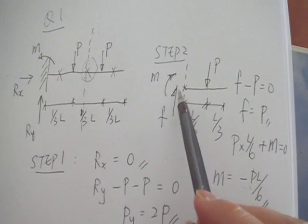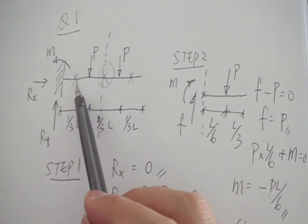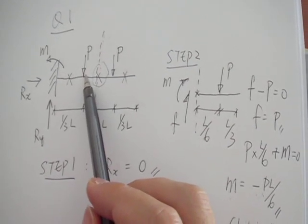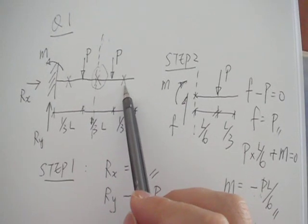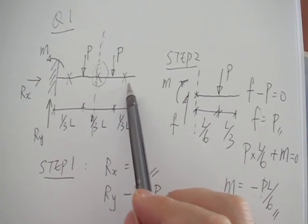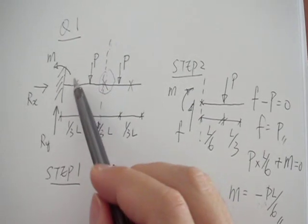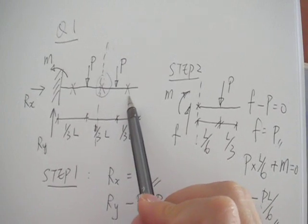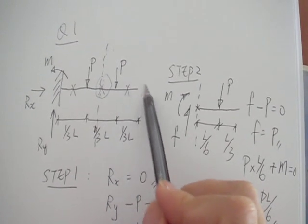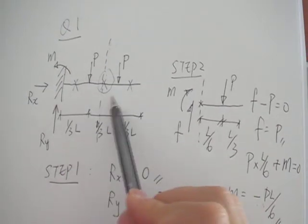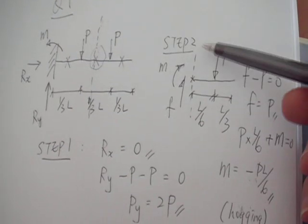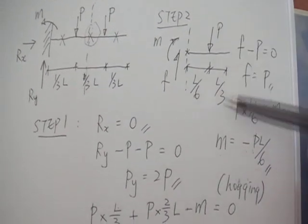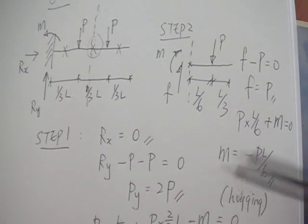So you can repeat the same process for the other points — between the left support and the first concentrated load, or for the point close to the free end. Just cut it there, and then consider either the left part or the right part. Sketch your free body diagram and write down your equilibrium equations, just like that.